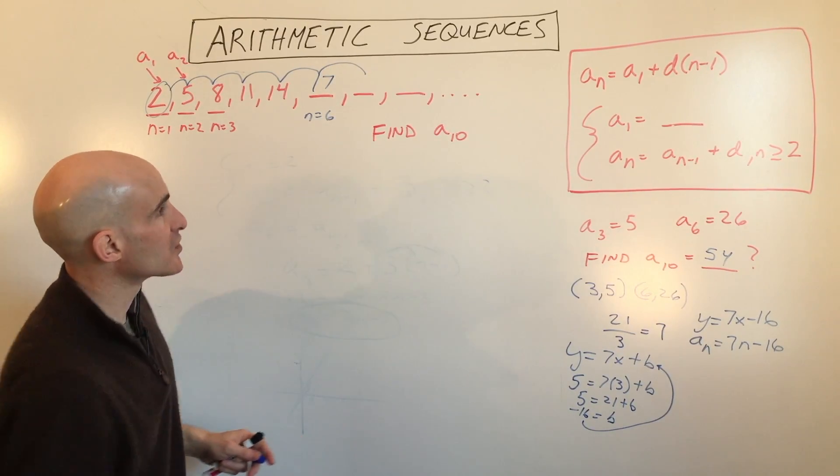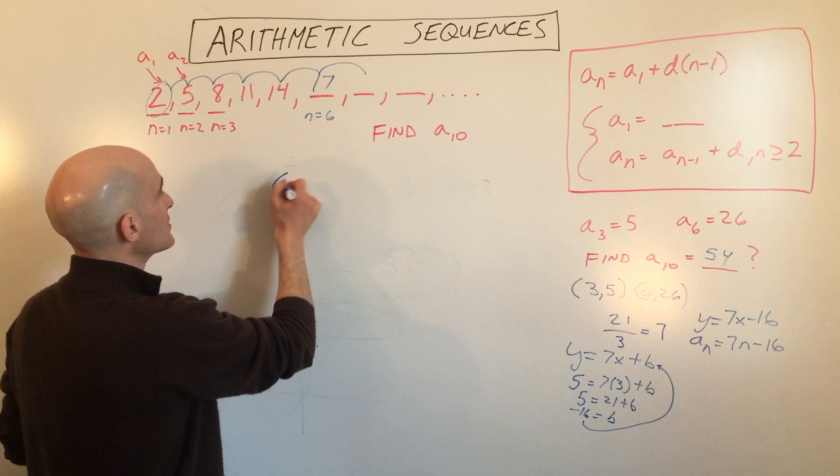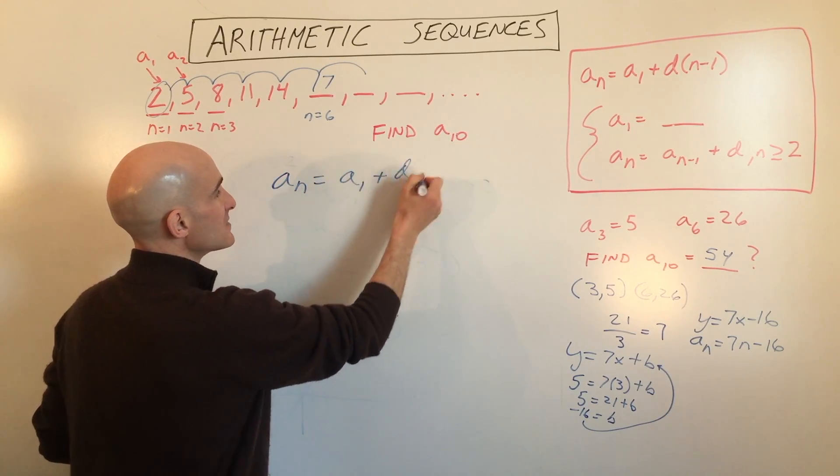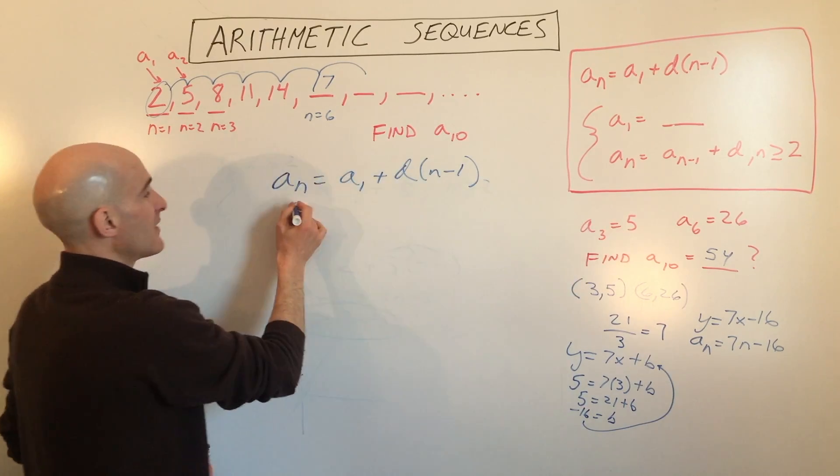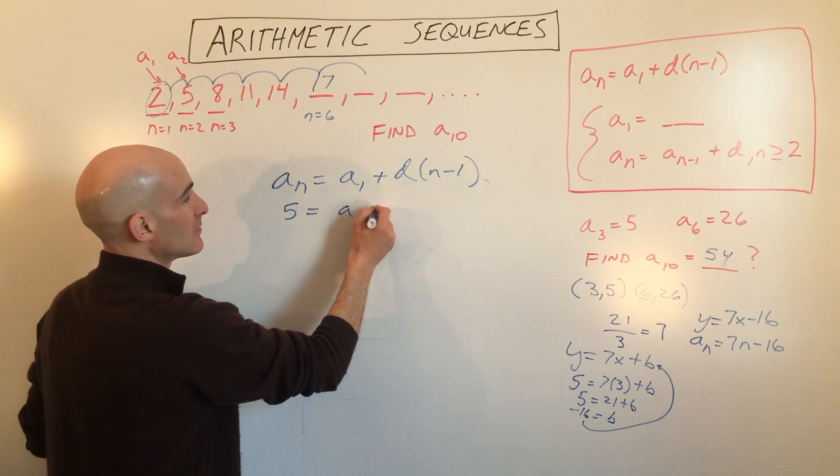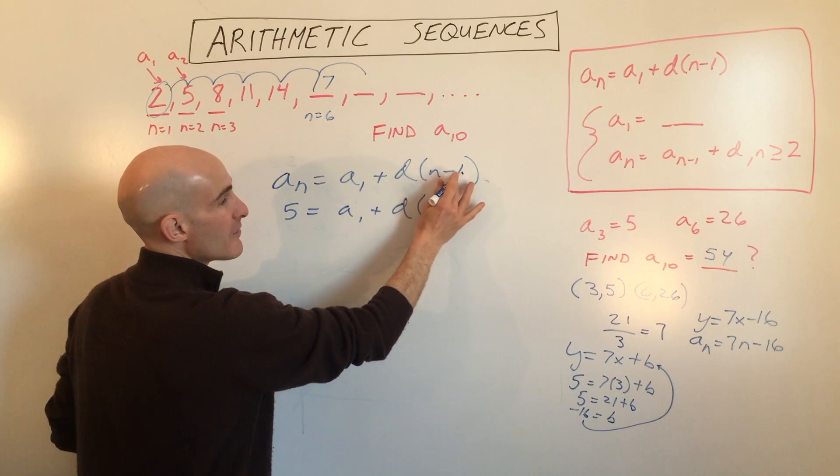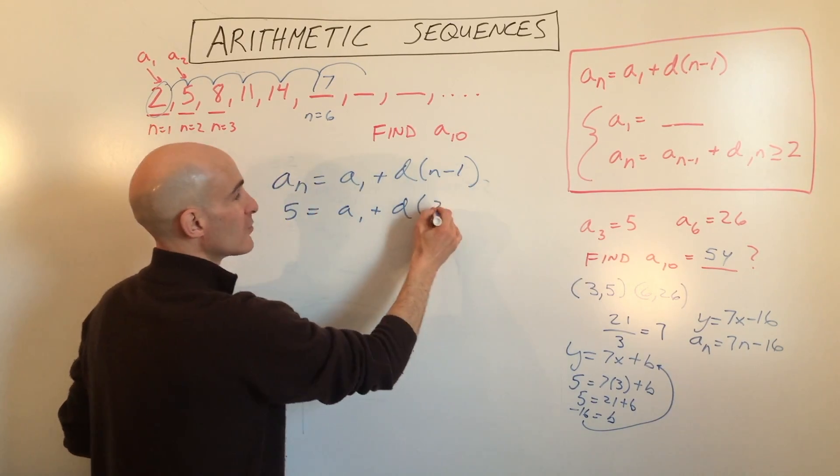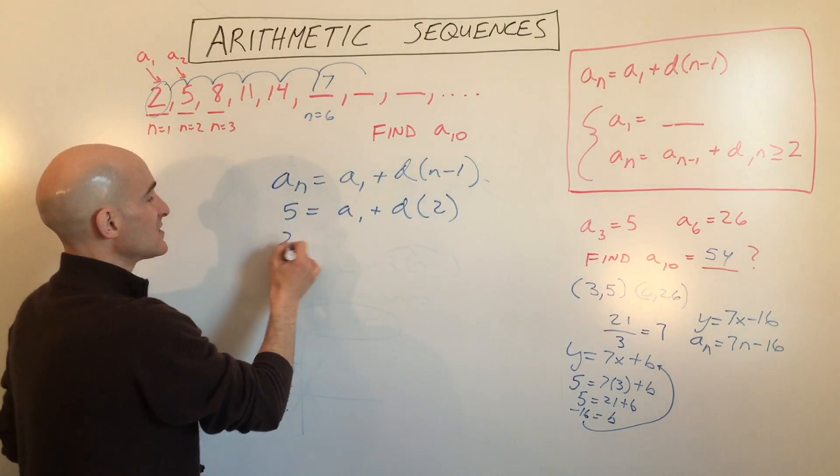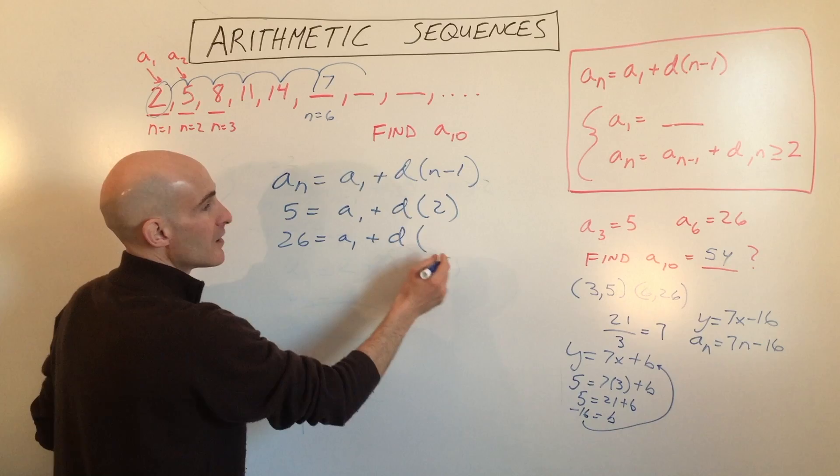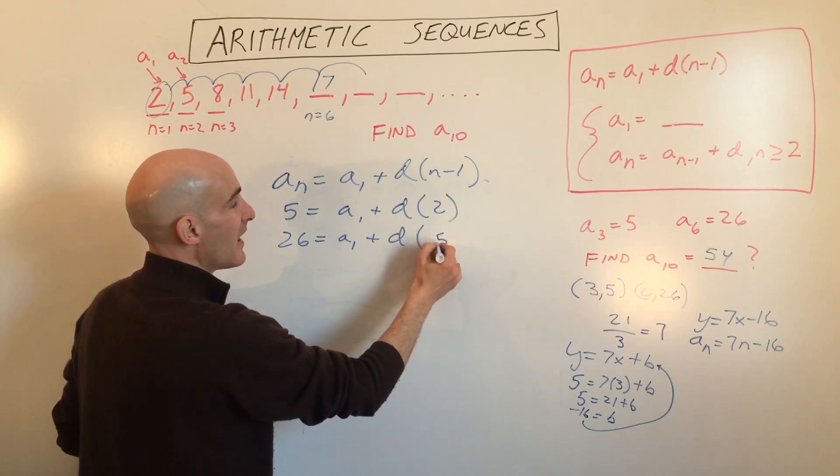So what we're going to do is we're going to say a sub n equals a sub 1 plus d times n minus 1. And when this value is 5, 3 minus 1, since this is the third term, this will be 2. And then for this one, 26, we don't know the first term, but 6 minus 1 is 5.